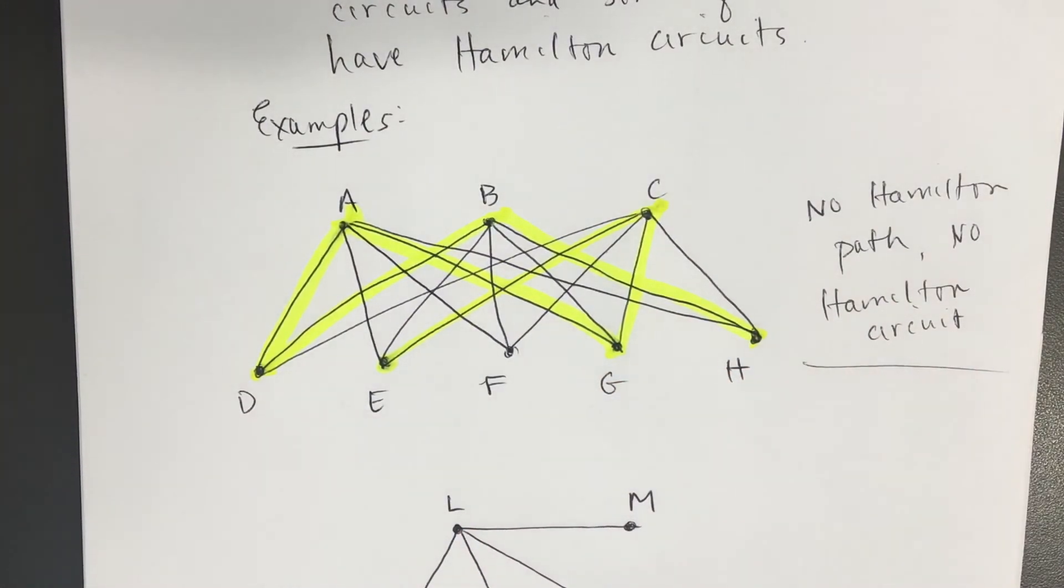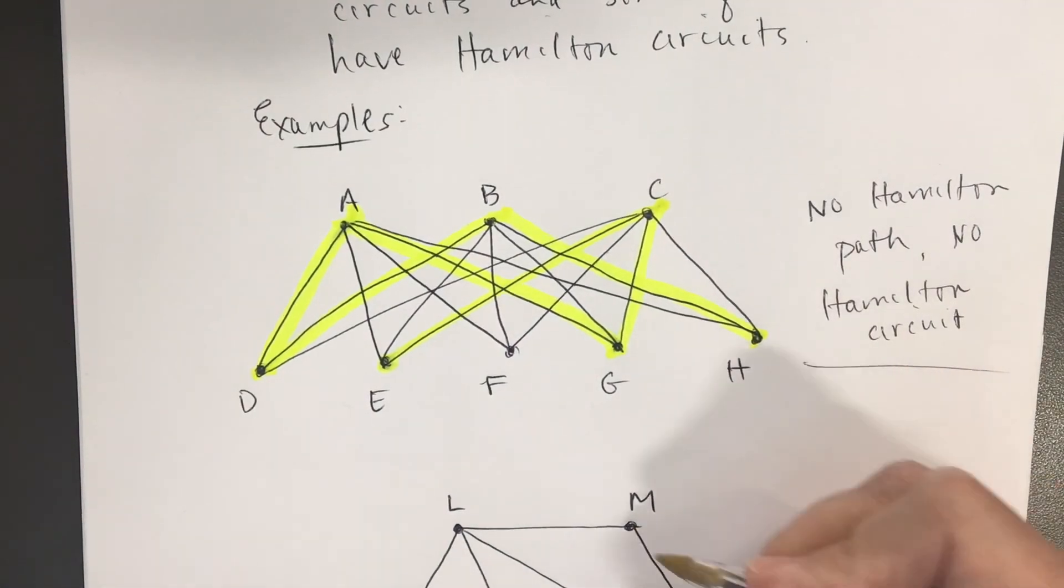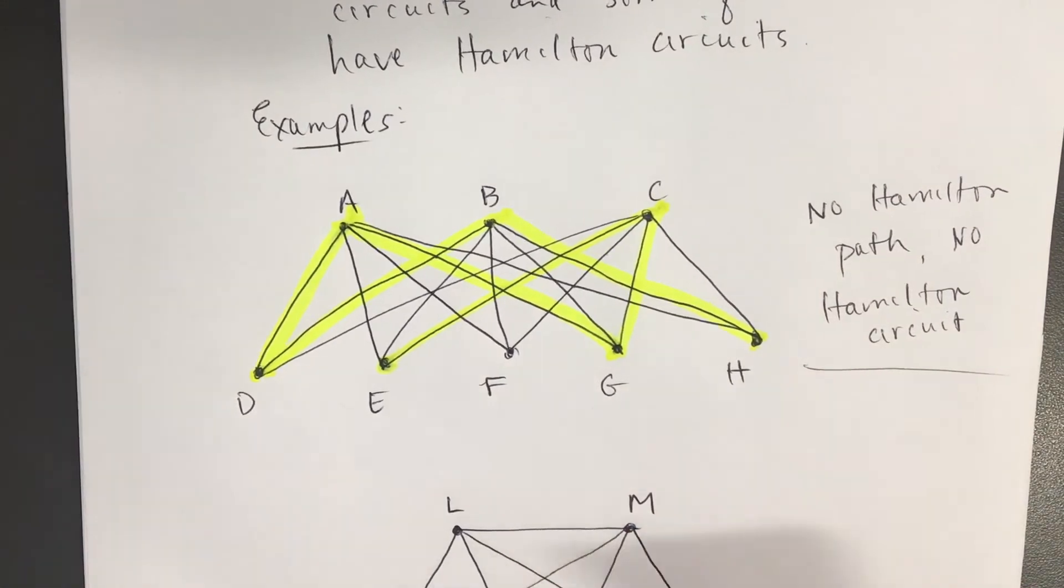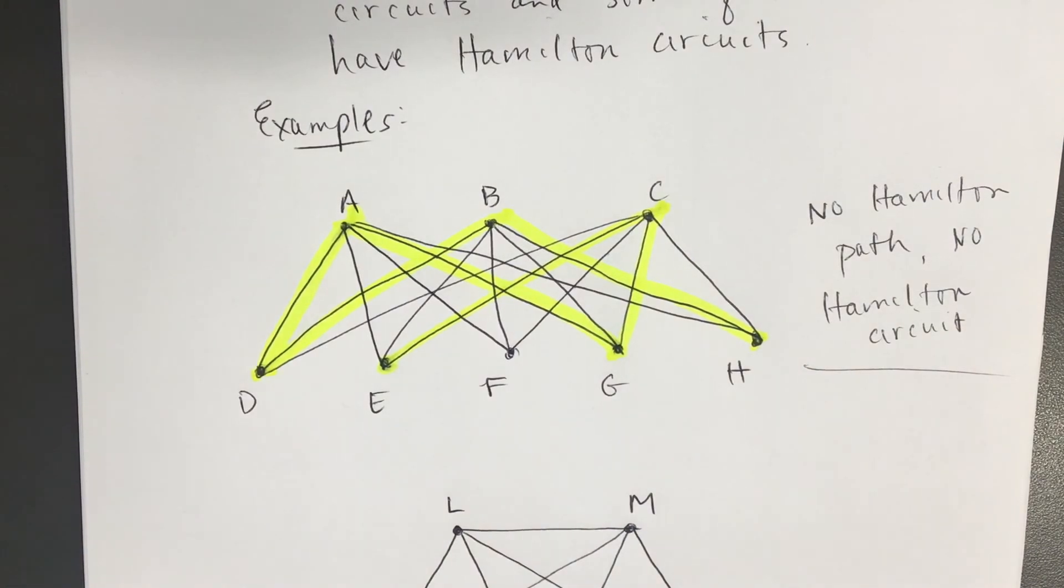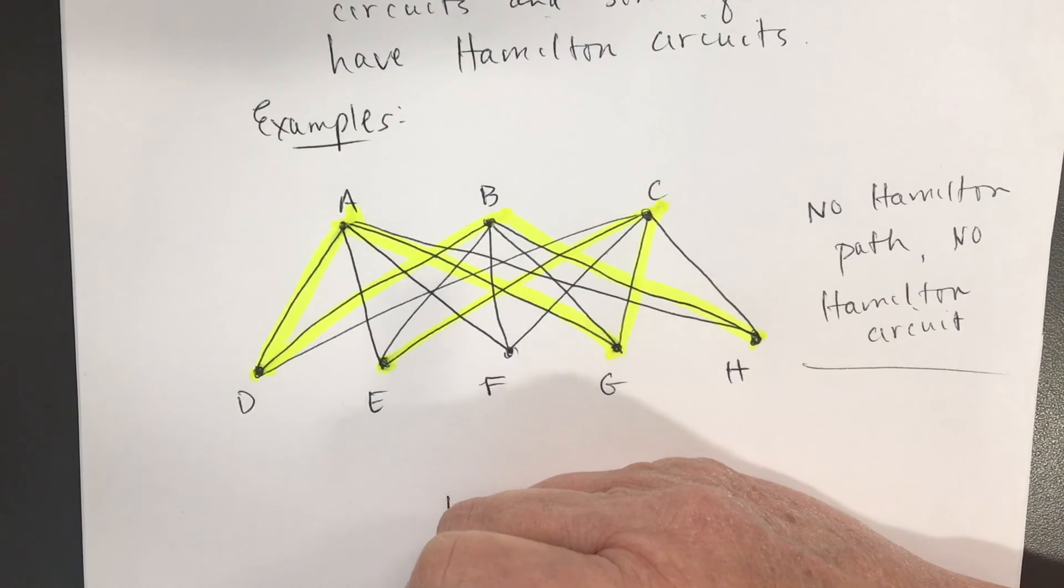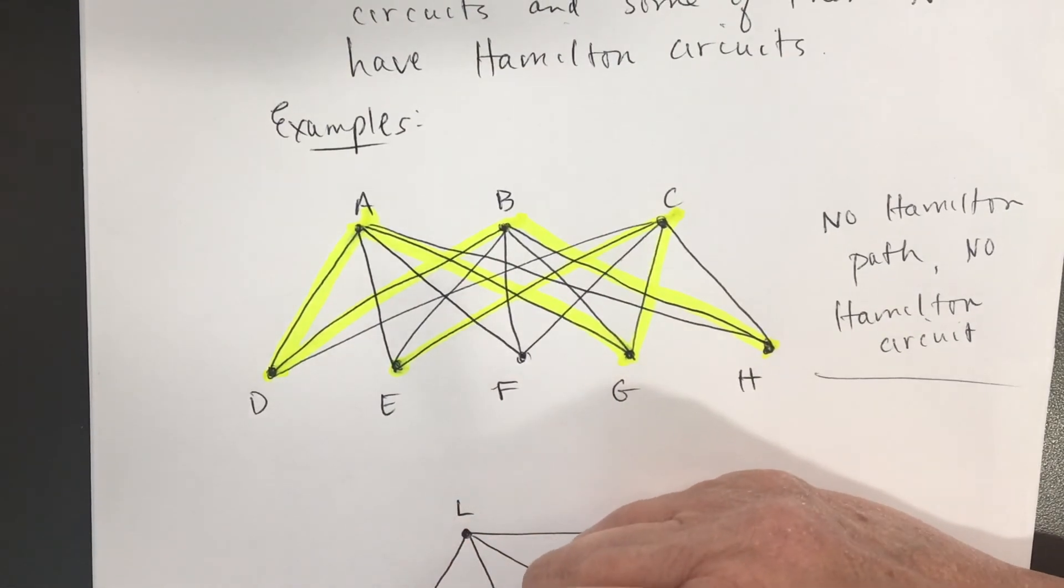But that's not all. There has to be an edge from M to P. There's an edge from M to O. There's an edge from M to N. That's not all. There's an edge from P to O. There's an edge from P to N. And there's an edge from N to O.